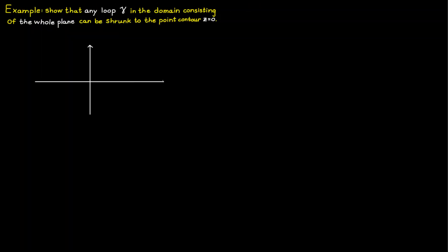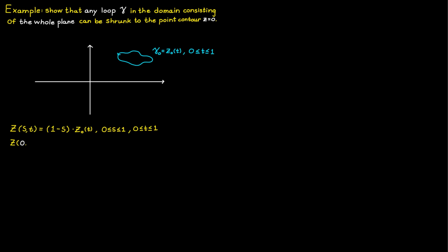In our next example, we show that any loop in the domain of the whole complex plane can be shrunk to the point contour C equal to zero. For an arbitrary loop parameterized by some function, the shrinking to a single point can be achieved by multiplying the parameterization by a scaling factor that varies from one to zero. Inserting S equal to zero gives the original loop, and inserting S equal to one gives the point.